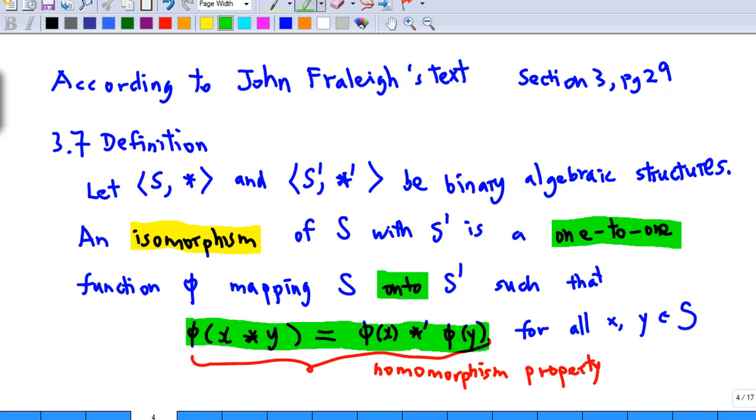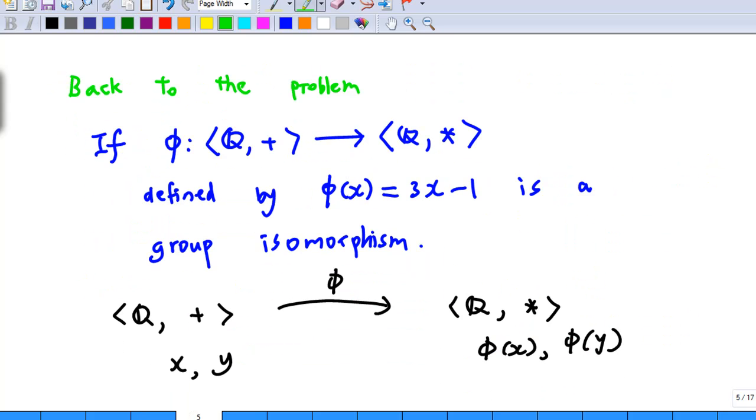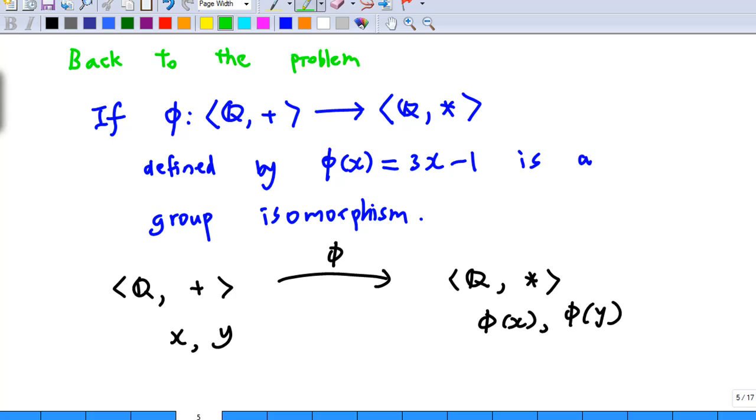How do we interpret this definition? So we go back to the problem. I have two groups there. The first group is the group of rational numbers under addition. And the second group is the group of rational numbers under star, where star is an unknown binary operation. We are going to find out.